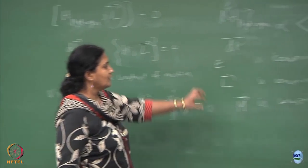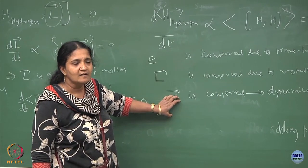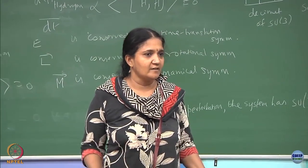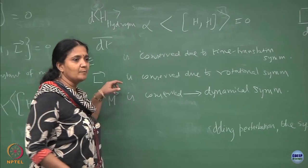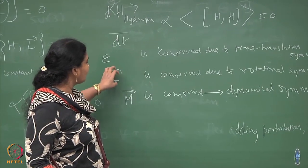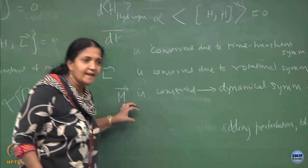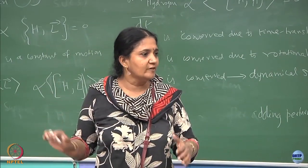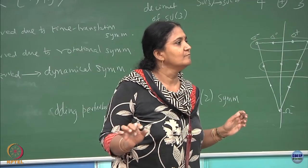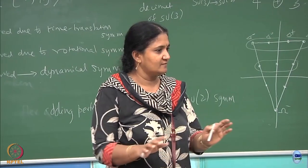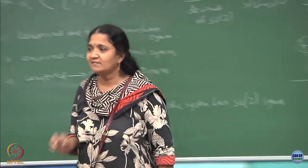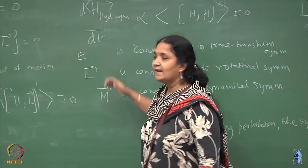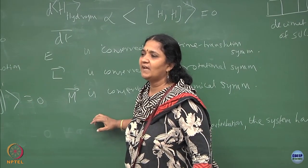We are going to use the fact that there are three generators for L and three generators for the Runge-Lenz vector M. We want to construct the algebra of these generators, which characterizes the symmetry for the hydrogen atom problem. The algebra of L with L, M with M, and mixing L and M — all components — gives me the algebra of generators corresponding to conserved quantities for the hydrogen atom problem.